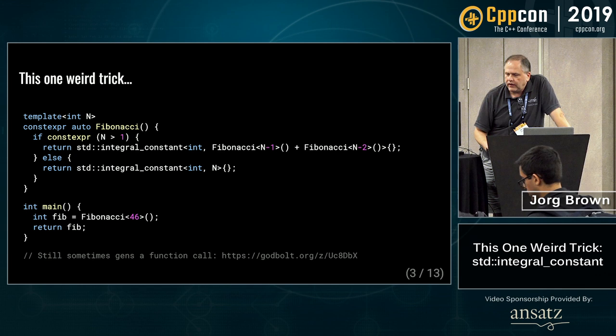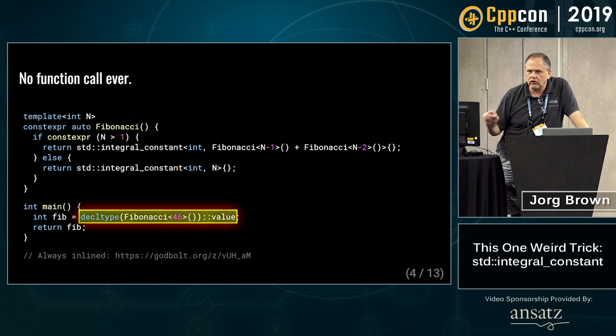Let's fix that. Instead of calling the function, we'll just use decltype and say: what type would you return if I did call you? That's going to be an integral_constant. We can pick ::value out of it. This results in no function calls whatsoever, even when all optimizations are off.